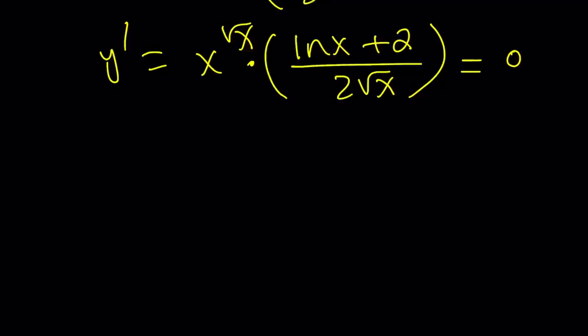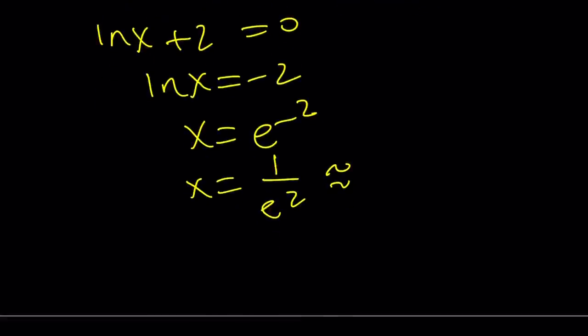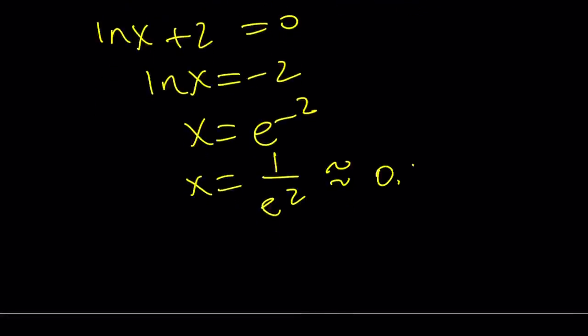So, we want LN x plus 2 to be 0. That indicates that LN x is equal to negative 2. And that means that x is equal to e to the power of negative 2, which means x is equal to 1 over e squared, which is approximately, I think, 0.135. Okay. So, that is my critical point.